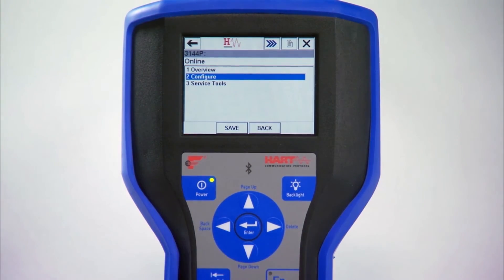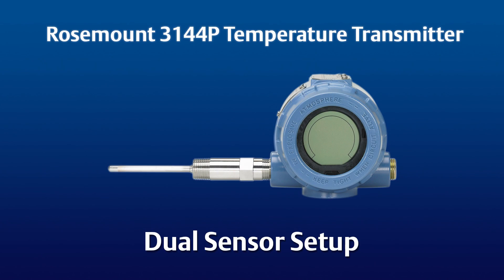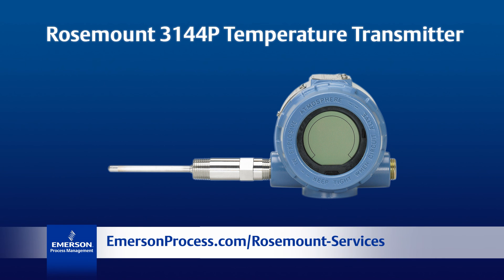For more information on dual sensor wiring and configuration for the 3144P transmitter, please see the Quick Start Guide or go to the Emerson website.